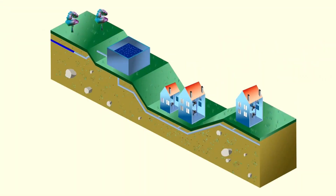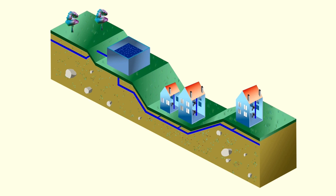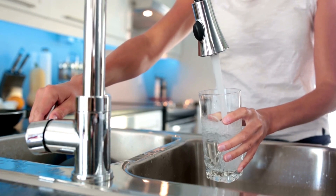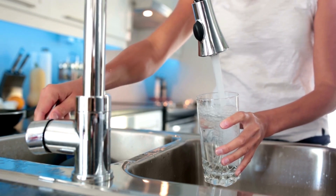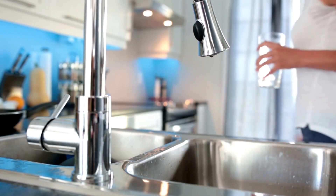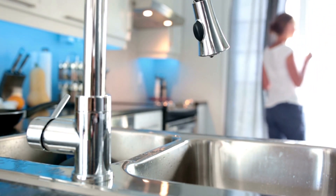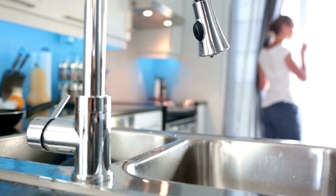Now, not everyone is on a well. If you live in the city, you're most likely on a municipal drinking water system, and your water is coming from a drinking water treatment plant where professional water treatment operators ensure that your water is safe for you to consume. If you don't know where your water comes from, check with your family when you get home tonight. It's important to know if your water is coming from the ground or a municipal water supply, because your actions could directly influence your family's drinking water.